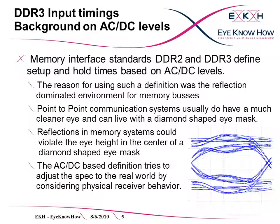Therefore, the AC-DC level concept, including the derating, was adapted to ensure that the receiver will switch fast enough to get reasonably small setup times, while not switching back if a reflection hits the receiver later on. This is similar to the physical behavior of a normal DRAM receiver. The eye shown on the lower right of the slide is a typical result of a two-slot memory system simulation. One can clearly see the reflections limiting the rising and falling edges. We will see this eye later in a comparison of a diamond-shaped eye mask versus the AC-DC based mask.